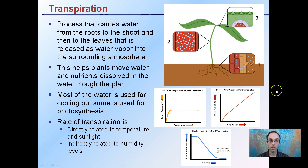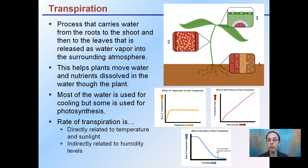Transpiration is a very important plant process — it carries water from the roots of the plant to the shoots and ultimately out the leaves as water vapor. This helps the plant move water and nutrients dissolved within it. Since the plant doesn't have blood, it uses this water absorbed through the roots, sending it through the shoots, dissolving minerals along the way, and also allowing it to cool itself. Its number one use is as a cooling process, even though some water is used for photosynthesis. The rate of transpiration is directly related to temperature and sunlight intensity — as temperature increases, so does transpiration.